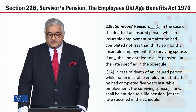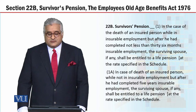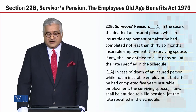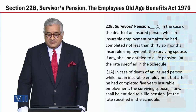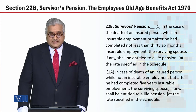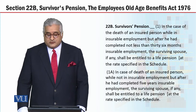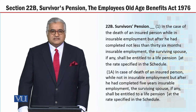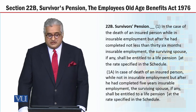So, my dear students, 22B subsection 1 کو پڑھتے ہیں: in the case of the death of an insured person while in insurable employment, but after he had completed not less than 36 months insurable employment, the surviving spouse, if any, shall be entitled to life pension at the rates specified in the schedule. اگر کوئی insurable person ہے اور وہ فوت ہو جاتا ہے تو اس کا جو surviving spouse ہے جو کہ زندہ ہے، اسے life pension ملے گی جس rate پر جو کہ law کے ساتھ attached schedule میں mentioned ہوتے ہیں۔